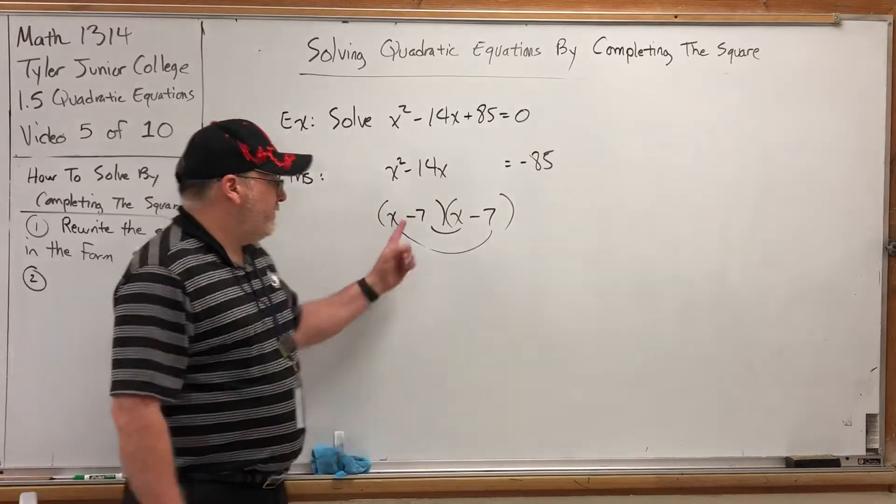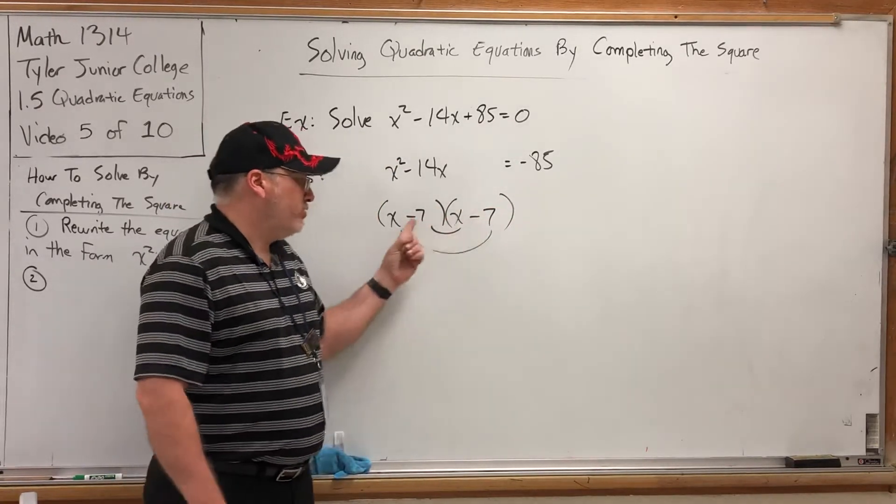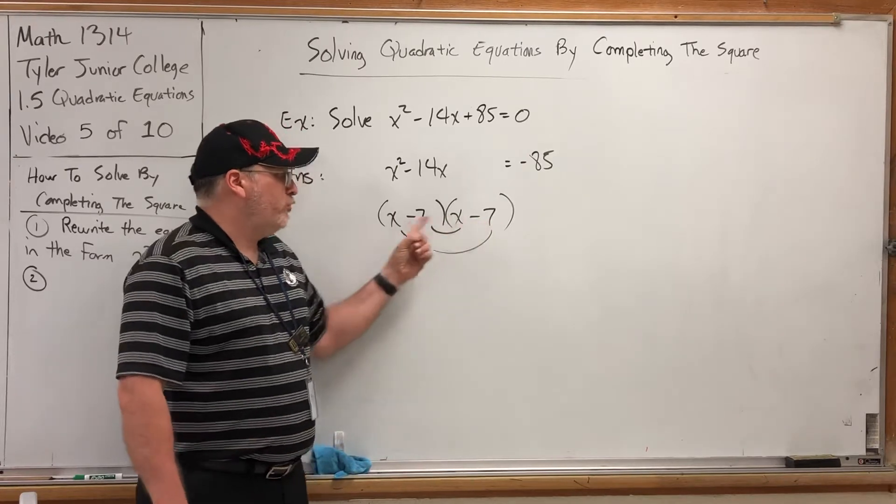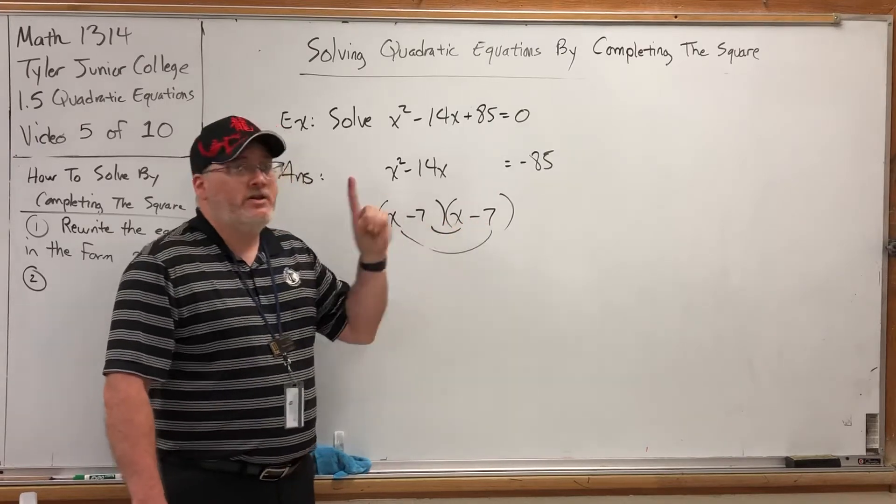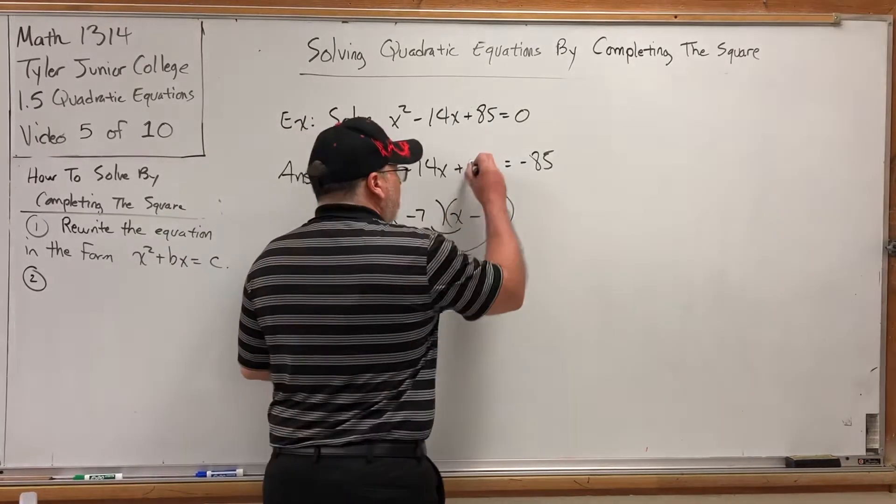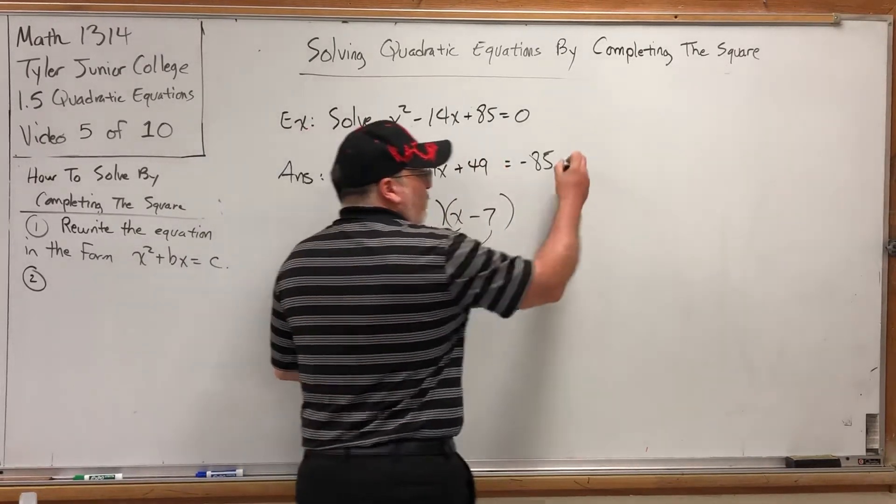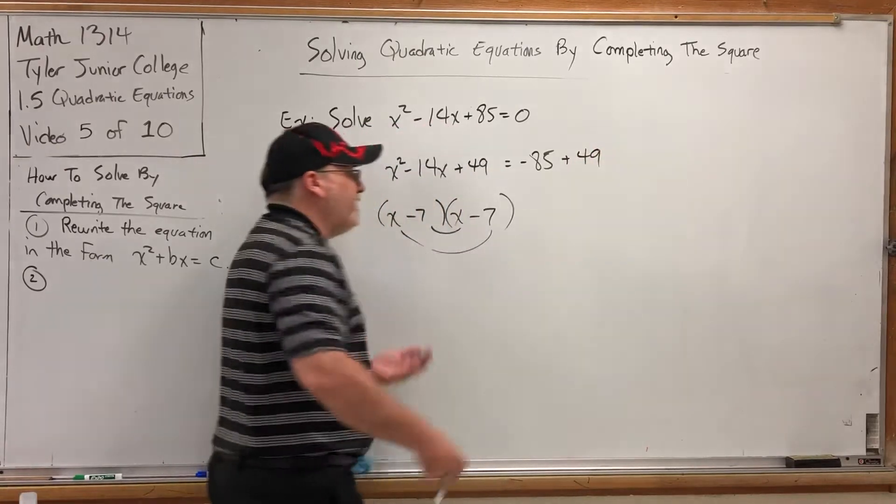But, if these two constant terms in the factors are negative 7, what is their product as the last part of FOIL? Negative 7 times negative 7 is positive 49. So, we need to add 49 to both sides. But how are we going to write that generically?